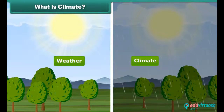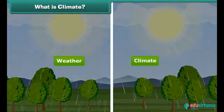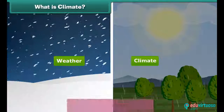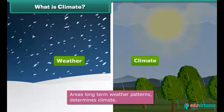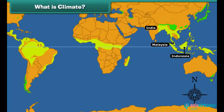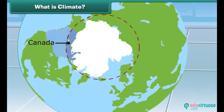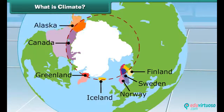Is weather and climate the same? No. An area's long-term weather patterns determine its climate. For example, areas near the equator have a warm climate, and the areas near the poles have a much colder climate. So children, now you can easily differentiate weather from climate.